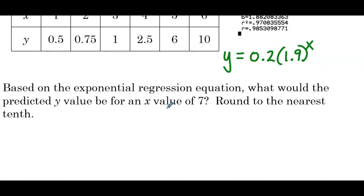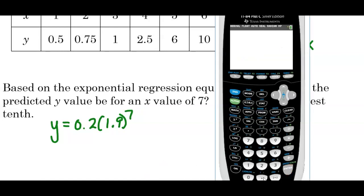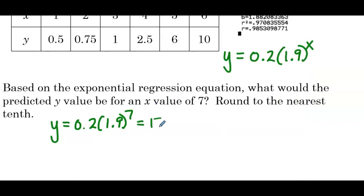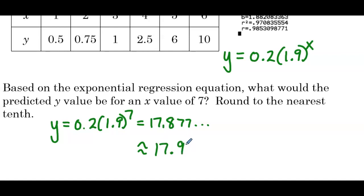Based on the exponential regression equation, what would the predicted Y value be for an X value of 7? Round to the nearest tenth. We're going to plug 7 in for X: 0.2 times 1.9 to the seventh. On the calculator: 0.2 times 1.9, using the up-arrow exponent key, to the 7th. Hit enter — that's 17.877. Rounding to the nearest tenth, that would be about 17.9, the predicted Y value for an X value of 7.